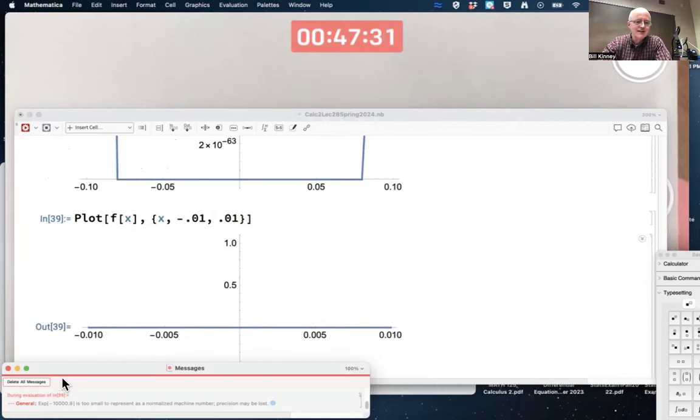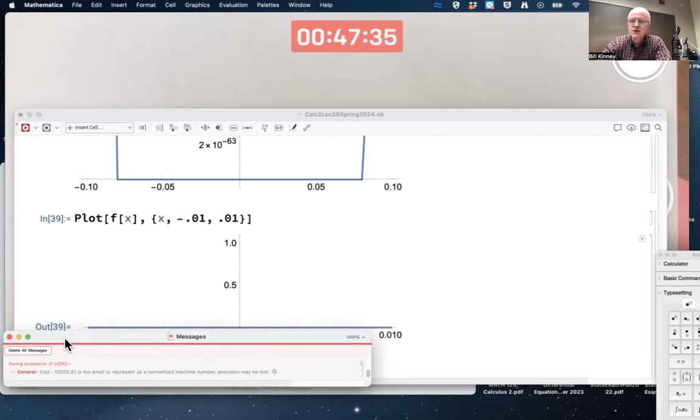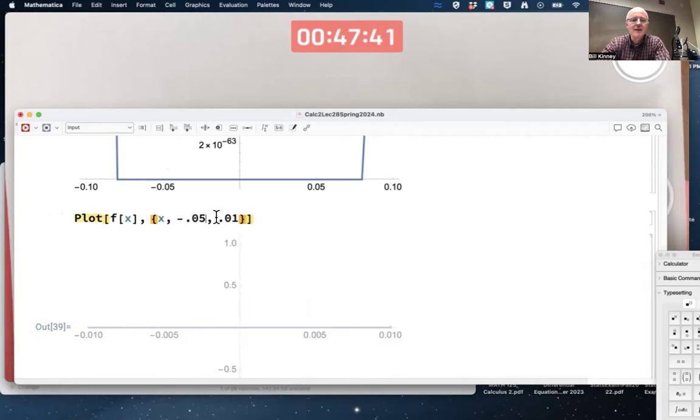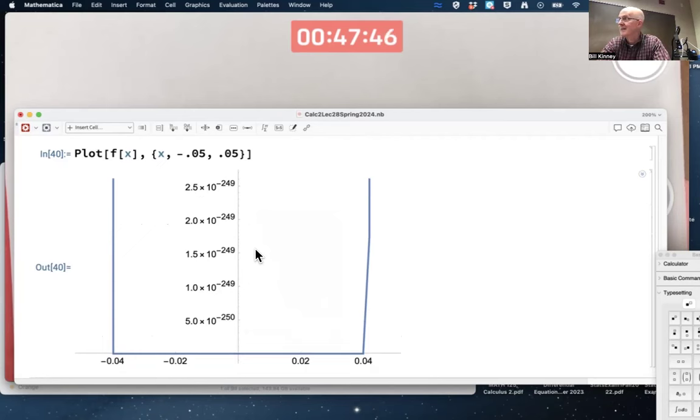It gives up. You can't probably see that message, but it says too small to represent as a normalized machine number. Let's try this: 10 to the negative 249 power.